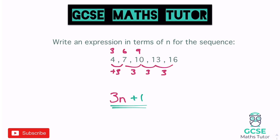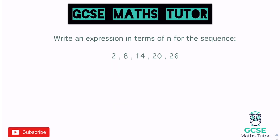A little trick I'll be using throughout the video: just go backwards one term. Since the sequence goes up by 3, going backwards we subtract 3. Taking away 3 from 4 gives us 1, and that positive 1 tells us the constant to add — so we write 3n + 1. This tells us how far away from the times table the sequence sits.